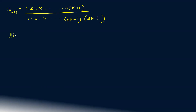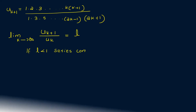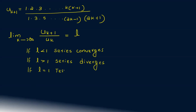Now, the ratio test: compute the limit as k tends to infinity of u_{k+1} divided by u_k. If L is less than 1, the series converges. If L is greater than 1, the series diverges. If L equals 1, the test fails — in that case, change the variable.